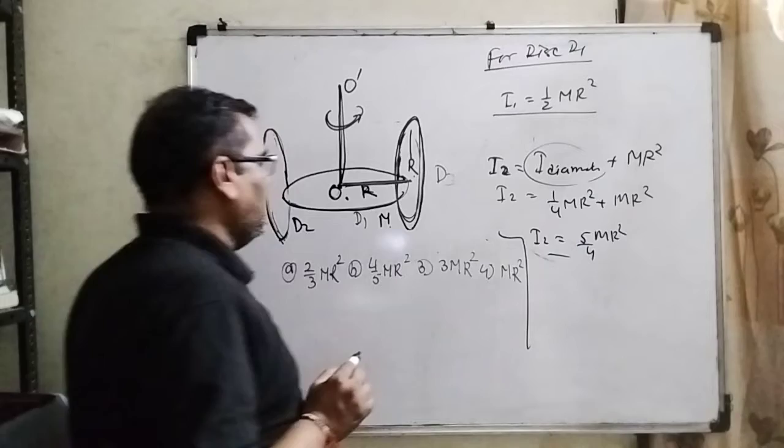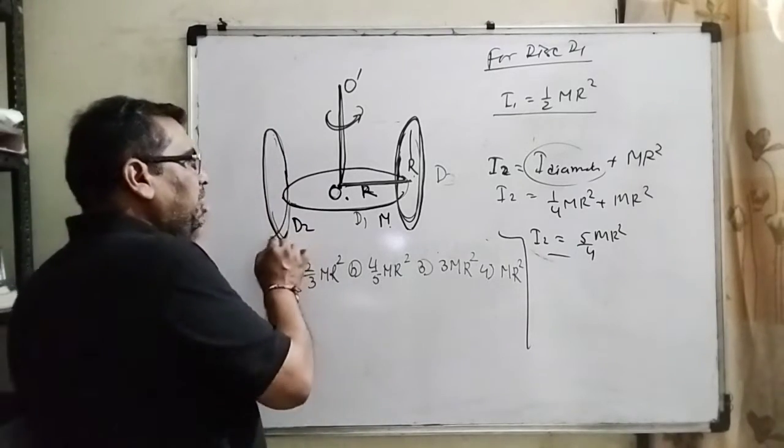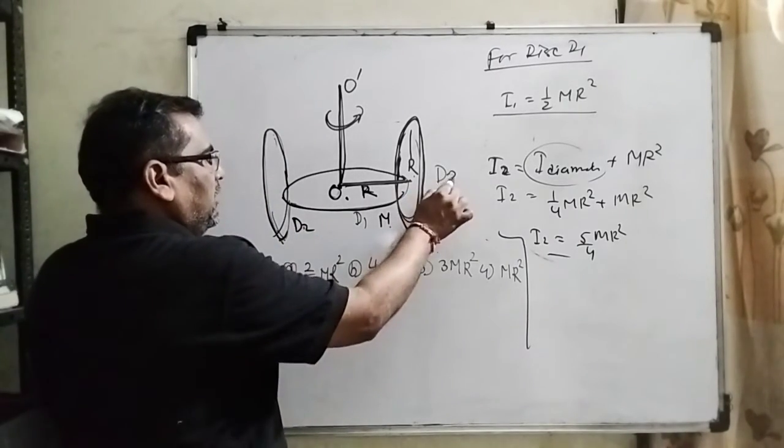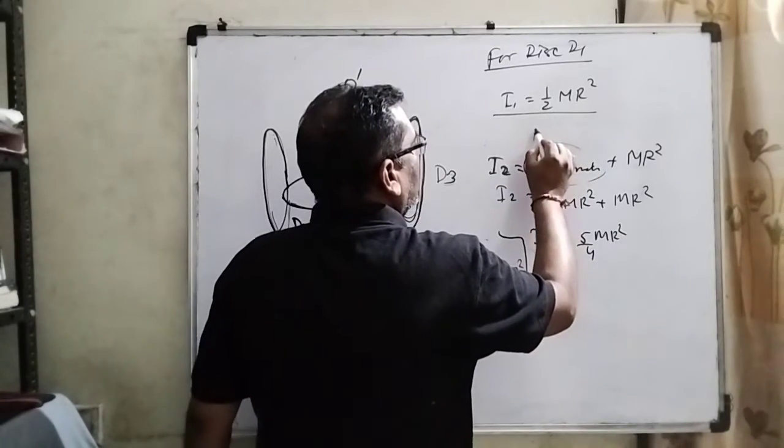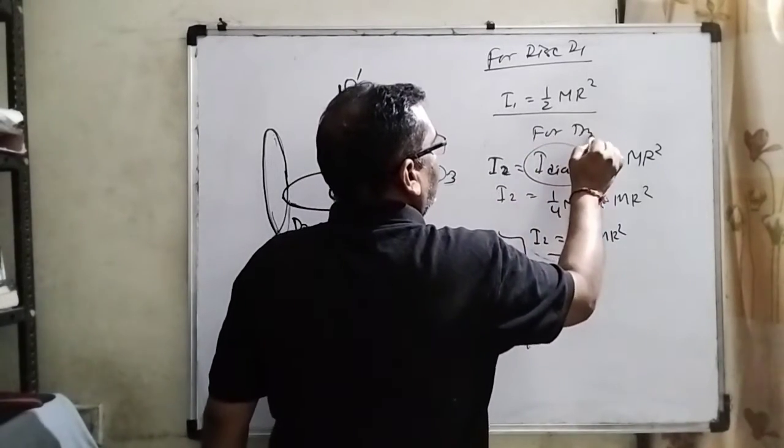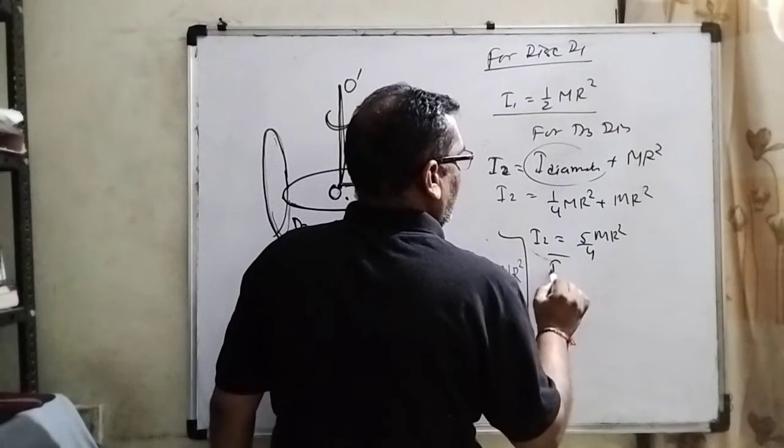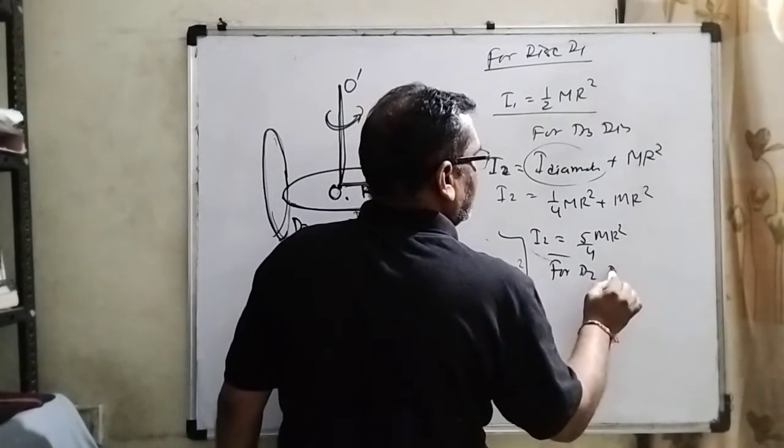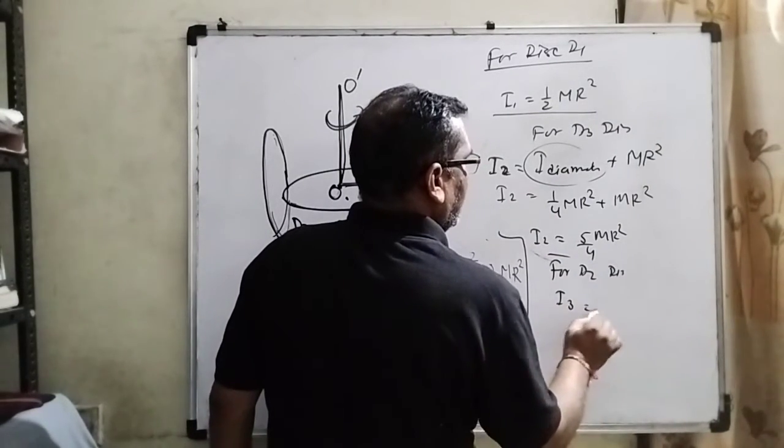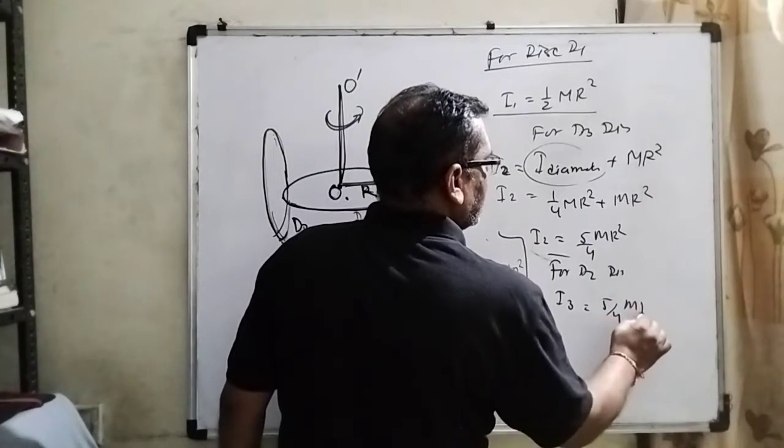And identically we have for the D3 disk and for D2 disk. Same, I3 equal to 5/4 MR².